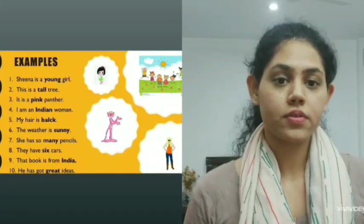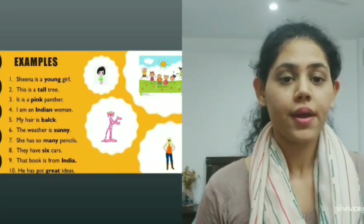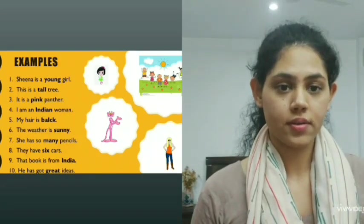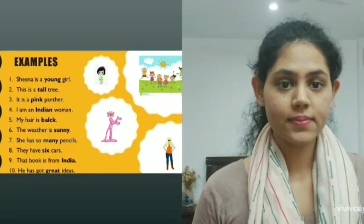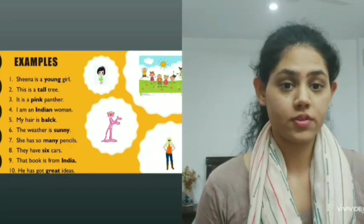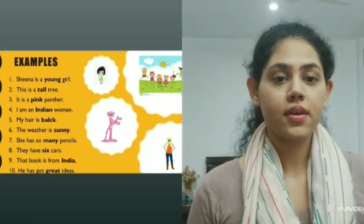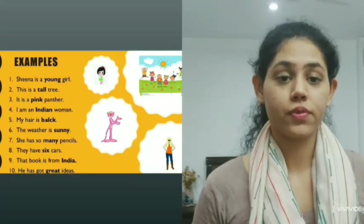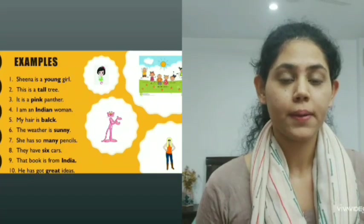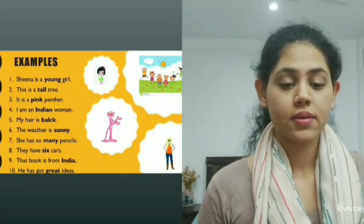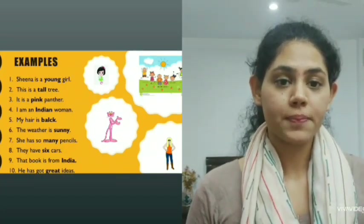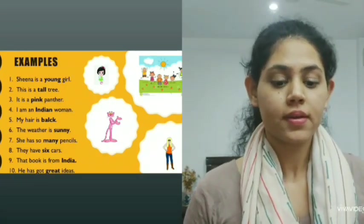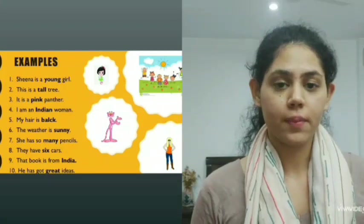For example, the first: Sheena is a young girl — here the subject is Sheena, and we are trying to tell her age, that she is young. This is a tall tree — 'tall' being the adjective, since we are defining the tree by its height. It is a pink panther — we are telling about its color, so it could be an adjective too. Similarly, the rest of them follow the same pattern.